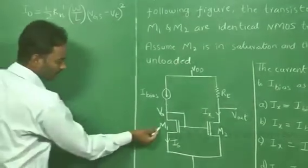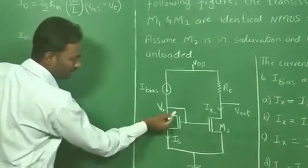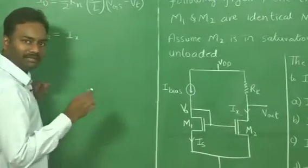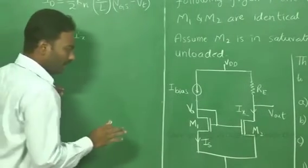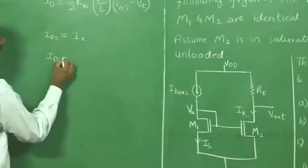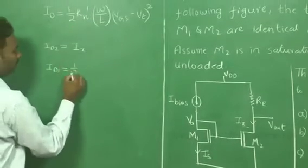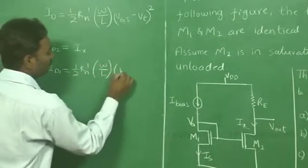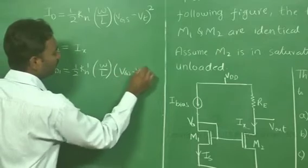Now, transistor M1 has its gate and drain shorted, so M1 is compulsorily in saturation region. Hence, ID1 can be represented in this form, that is one-half times KN' times W/L times (Vgs minus Vt) squared.